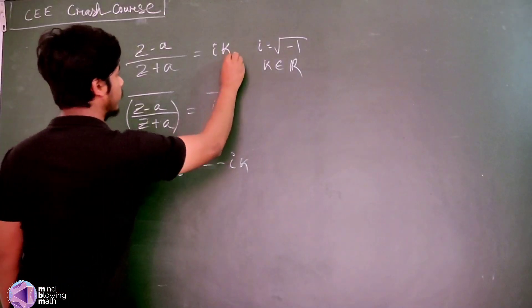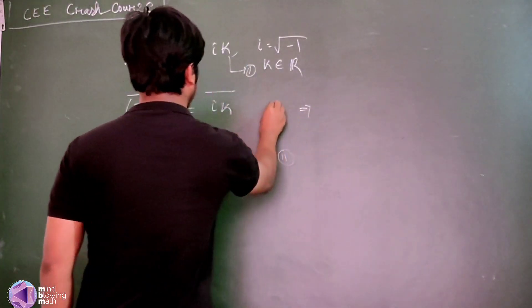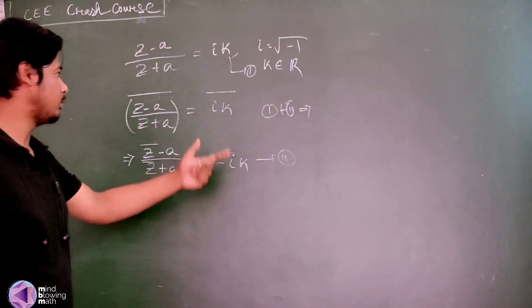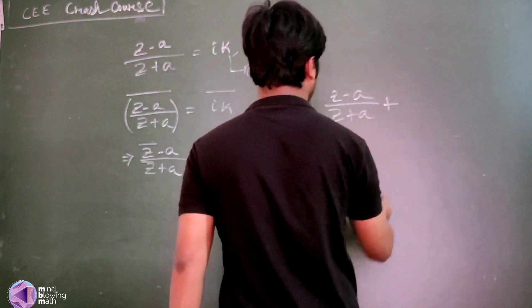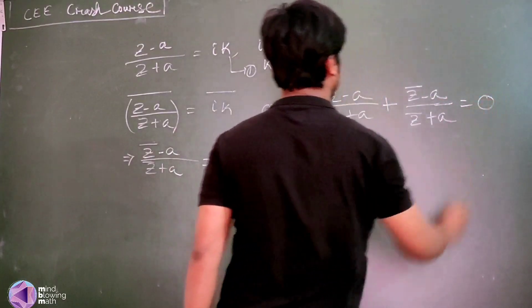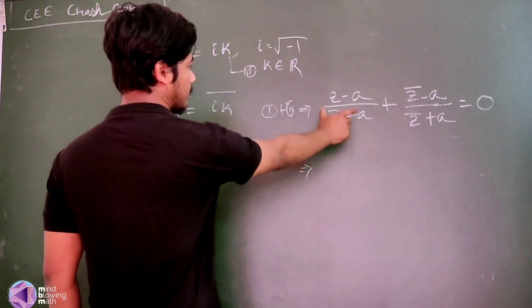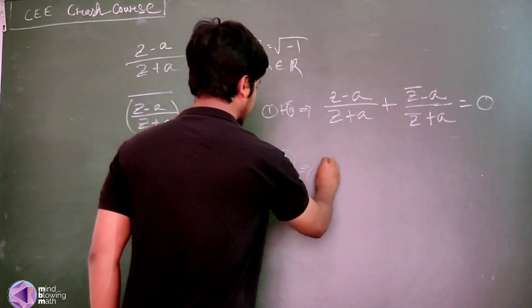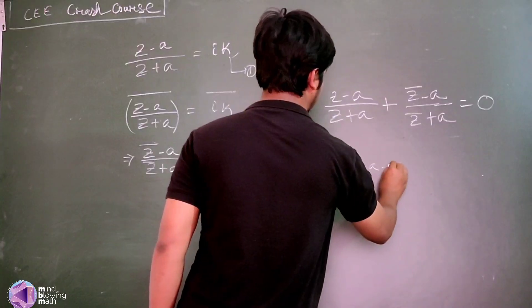Using equation number one plus ik and minus ik: (z minus a)/(z plus a) plus (z-bar minus a)/(z-bar plus a) is equal to zero.